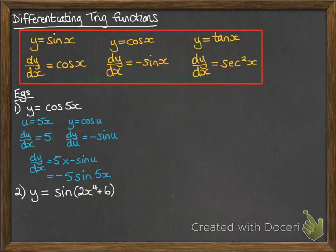Okay, so y equals sin of 2x to the 4 plus 6. So dy by dx is, if u is going to be that 2x to the 4 plus 6, we need to differentiate it. So that's 8x cubed. And then we times it by the derivative of the sin part of the function, which is cos.